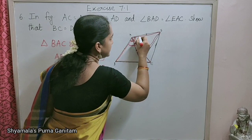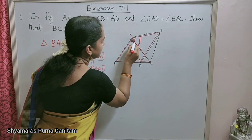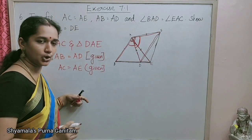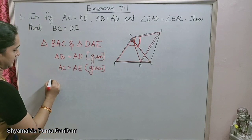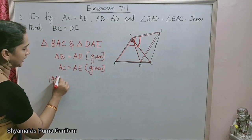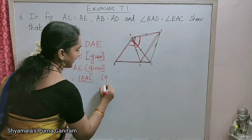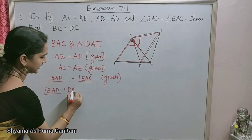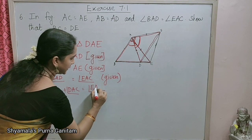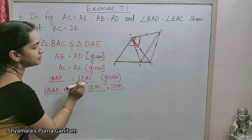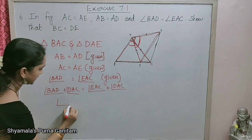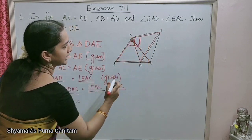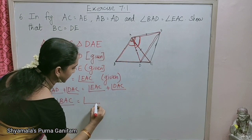So angle BAD plus angle DAC gives angle BAC. Similarly, angle EAC plus angle DAC gives angle EAD. So angle BAC is equal to angle EAD. We now have two sides — AB equal to AD, AC equal to AE — and the included angle BAC equal to EAD.